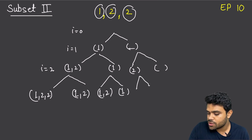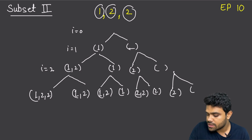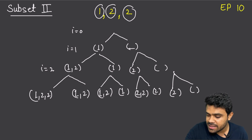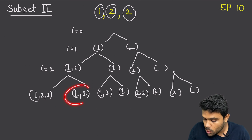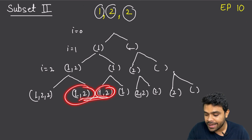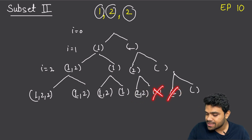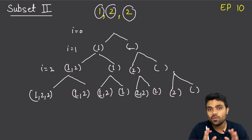We have generated 8 subsets, but we can see they are not all unique. [1, 2] appears twice — those two are duplicates. [2] also appears twice — those two are duplicates again. So we need to generate only the unique ones. In this problem, we need to generate the unique subsets.